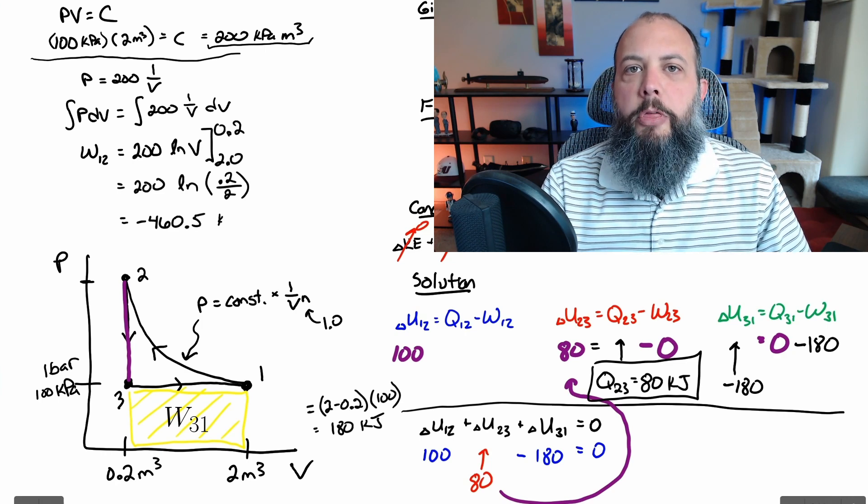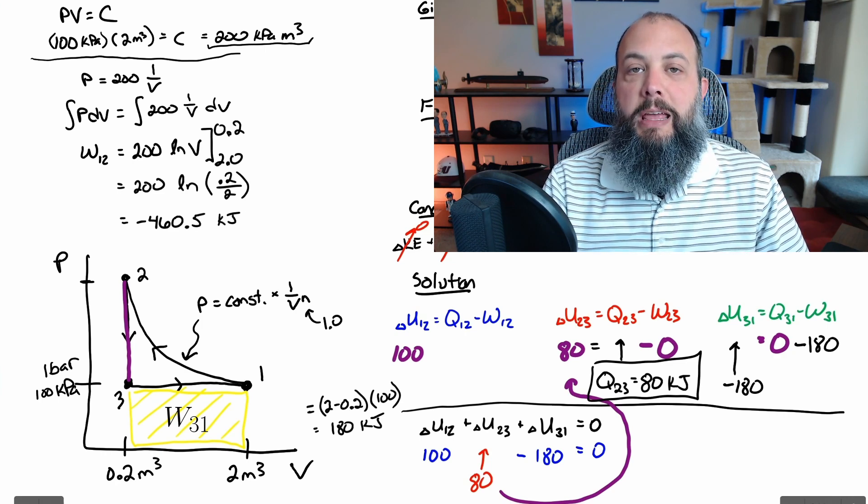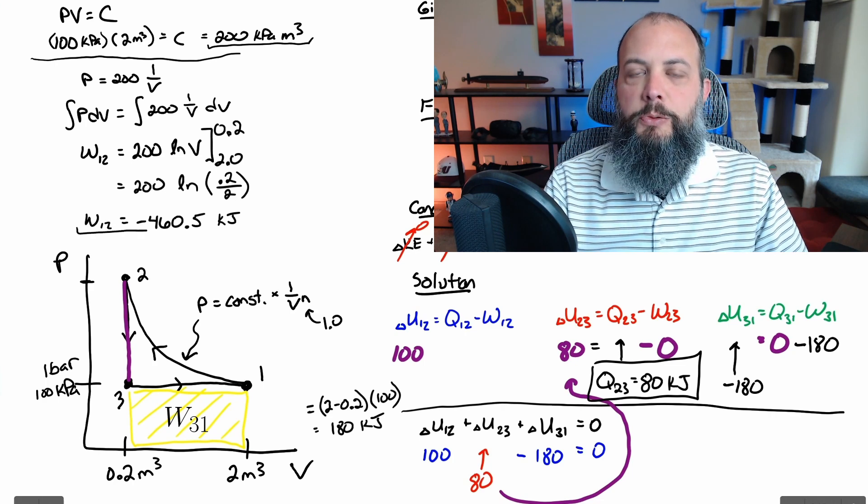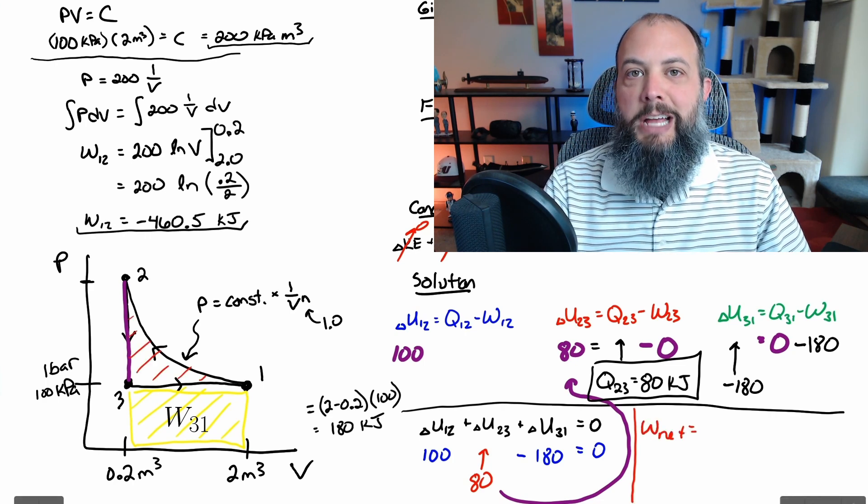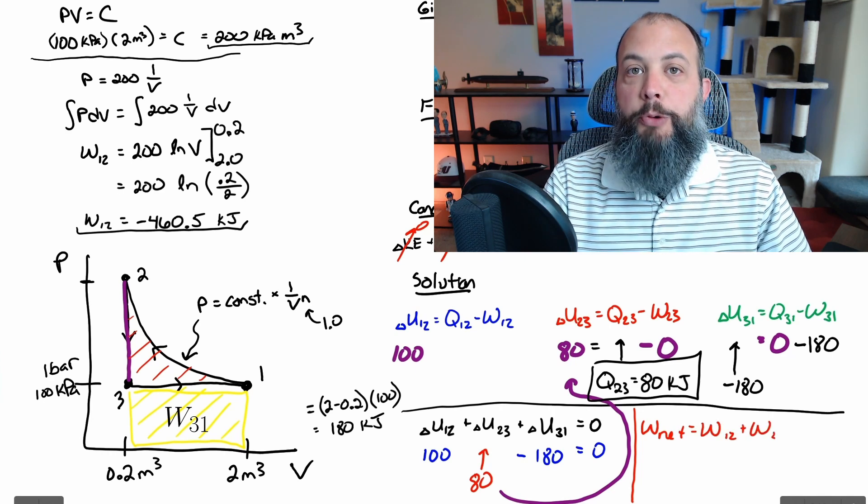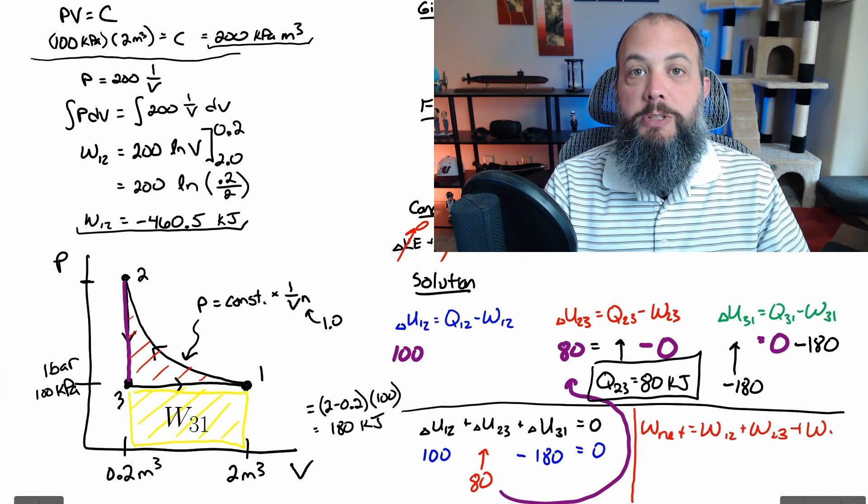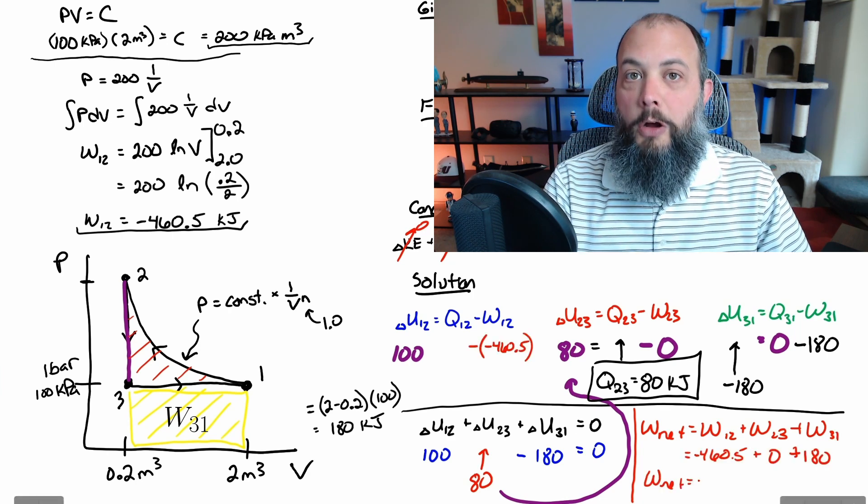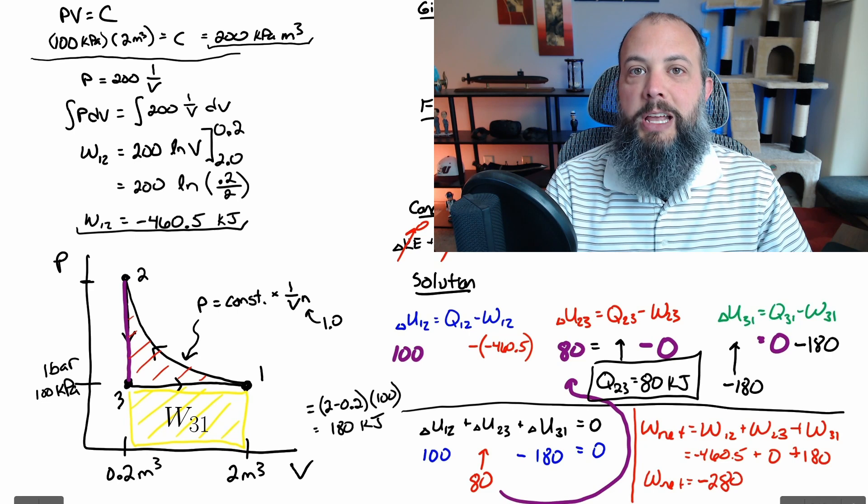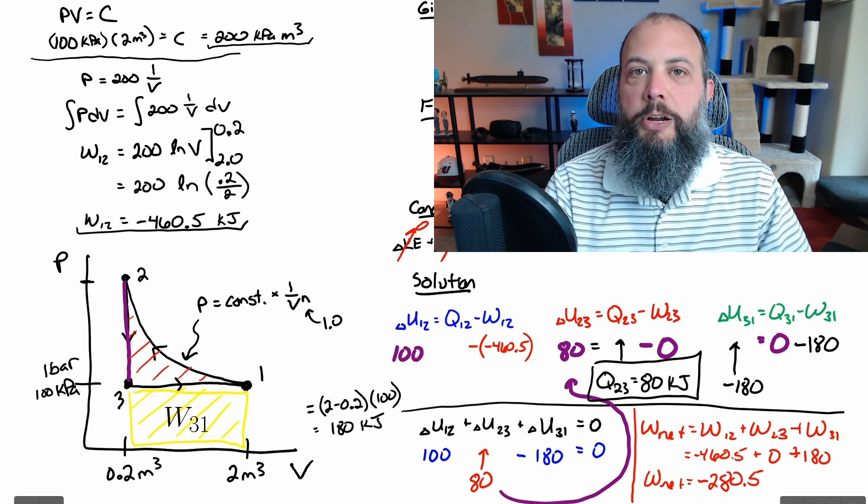To check whether this makes sense this curve is above that horizontal line from three to one so it should be a larger magnitude value than that rectangle because this curve includes the yellow shaded area and the red shaded area and since work from three to one was 180 and this term is 460 that's good it does make sense so the red area actually should be larger than the yellow area so if this were trying to scale 0.2 would actually be much higher up.